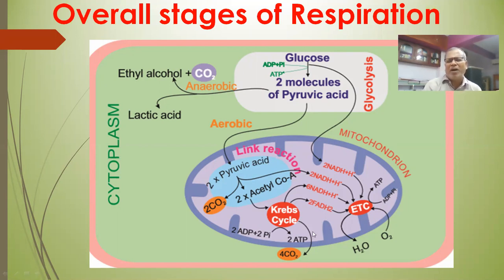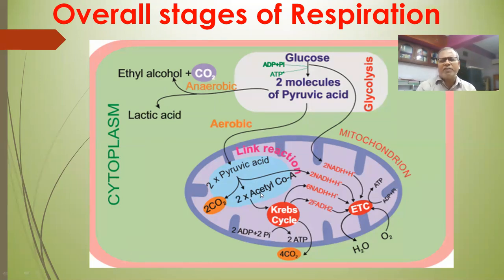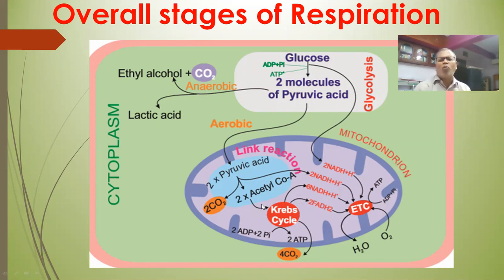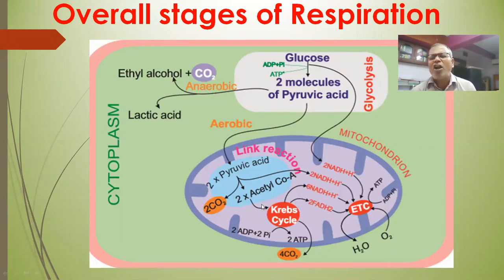In glycolysis, 2 ATP and 2 NADH₂ are formed. In the second step, oxidative decarboxylation, 2 NADH₂ are formed. We now come to the third step, the Krebs cycle. In the Krebs cycle, 2 molecules of acetyl CoA are completely oxidized to form carbon dioxide and water. It was reported by scientist Sir Hans Adolf Krebs. During this process, 6 NADH₂, 2 FADH₂, and 2 ATP molecules are formed.